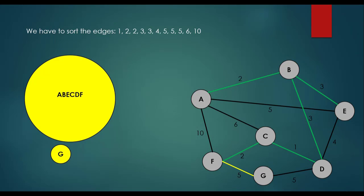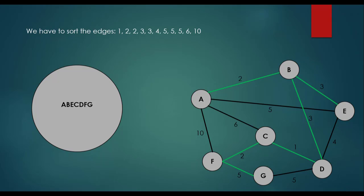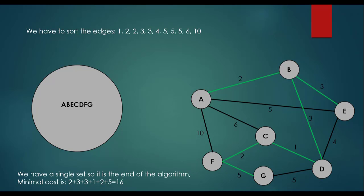Edge weight 5 between vertex F and vertex G: they are in distinct sets, so we merge them and add this edge to the minimum spanning tree. Now only a single set remains, meaning the algorithm is done. We have found the minimum spanning tree. The minimal cost is 2+3+3+1+2+5 = 16. That's all about the theory for Kruskal's algorithm.